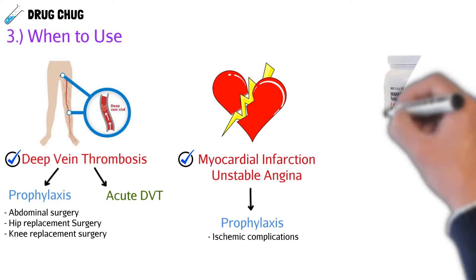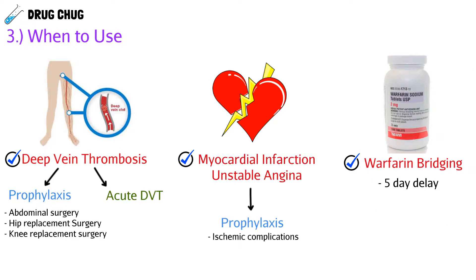One unique use is with warfarin. As we covered previously, warfarin is a blood thinner but it has a delayed onset — it takes about five days to work. So when a patient is newly starting warfarin for the first time, we'll dose five days of enoxaparin alongside it, so that by the time the warfarin kicks in, enoxaparin has already been working.